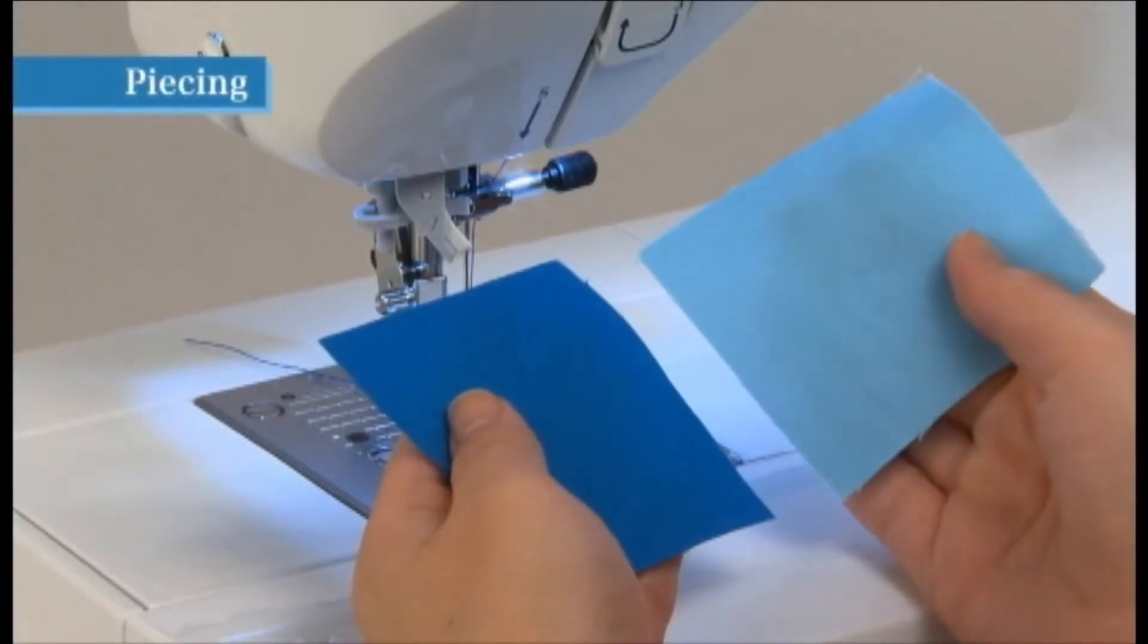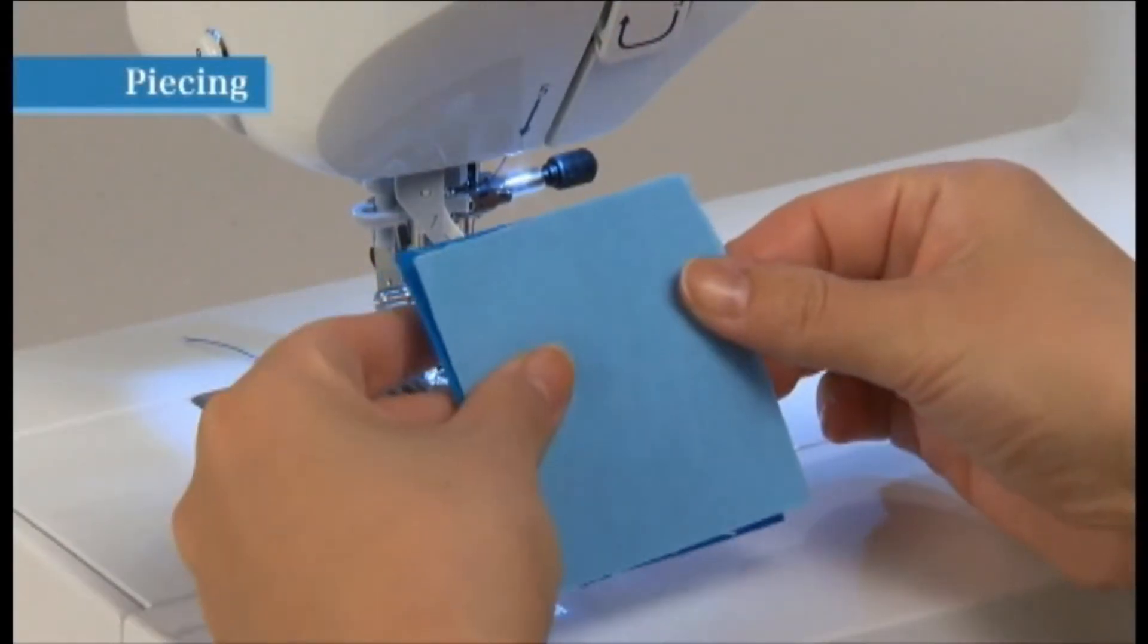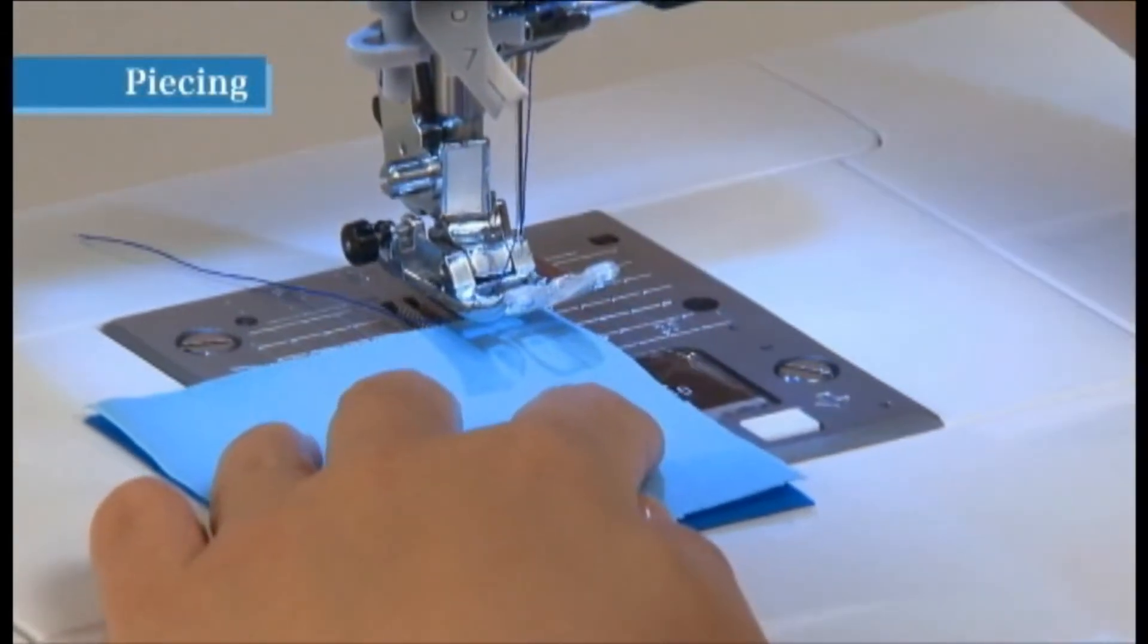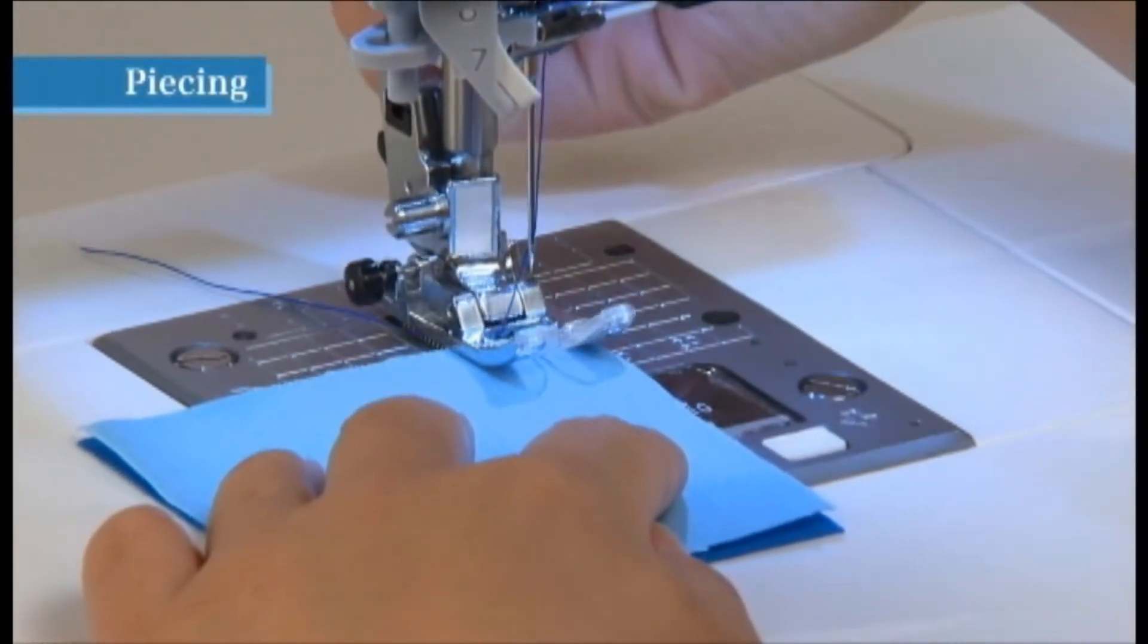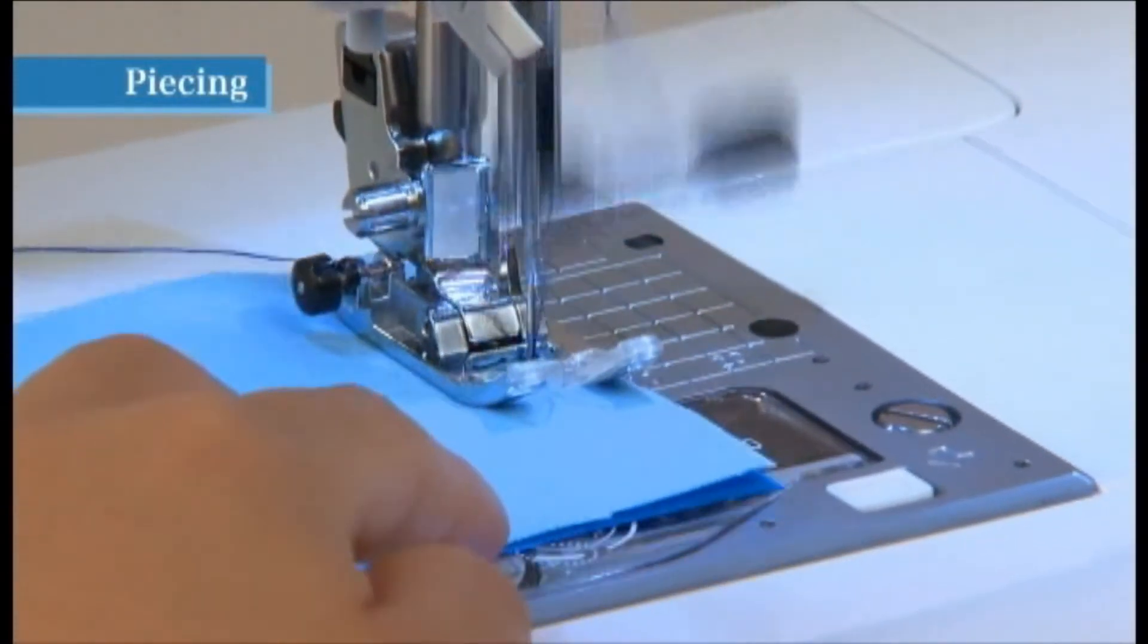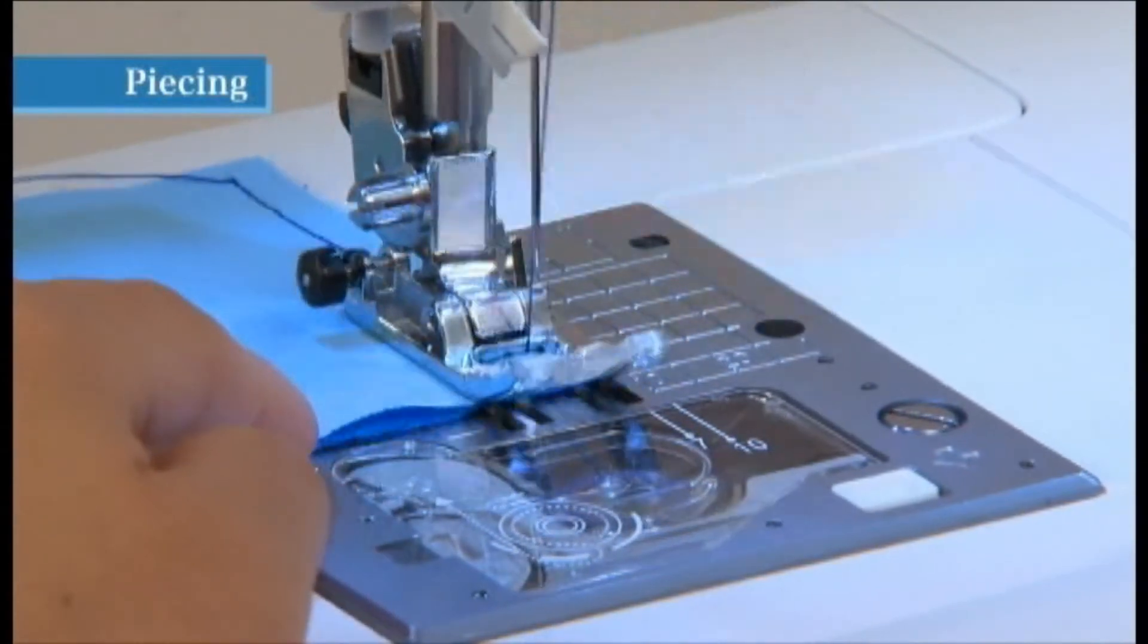Place two pieces of fabric right sides together and align the right edges of the fabric with the right edge of the presser foot. In this position, the needle will enter the fabric at quarter inch from the right edge, enabling you to sew with a seam allowance of quarter inch.